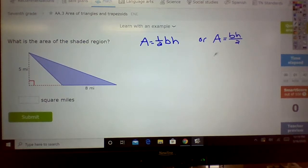So if I use this one, A is equal to 5 times 8 divided by 2. A is equal to 40 divided by 2. A is equal to 20.